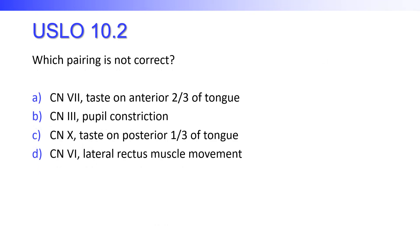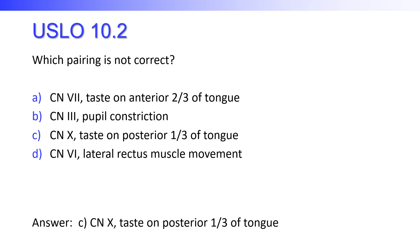Which pairing is not correct? Cranial nerve 7 — taste on the anterior two-thirds of the tongue. Cranial nerve 3 — pupil constriction. Cranial nerve 10 — taste on the posterior one-third of the tongue. Cranial nerve 6 — lateral rectus muscle movement. Hopefully you said C. Cranial nerve 10 does not innervate the posterior third of the tongue for taste — that would be cranial nerve 9. Cranial nerve 10 has taste receptors in the throat.